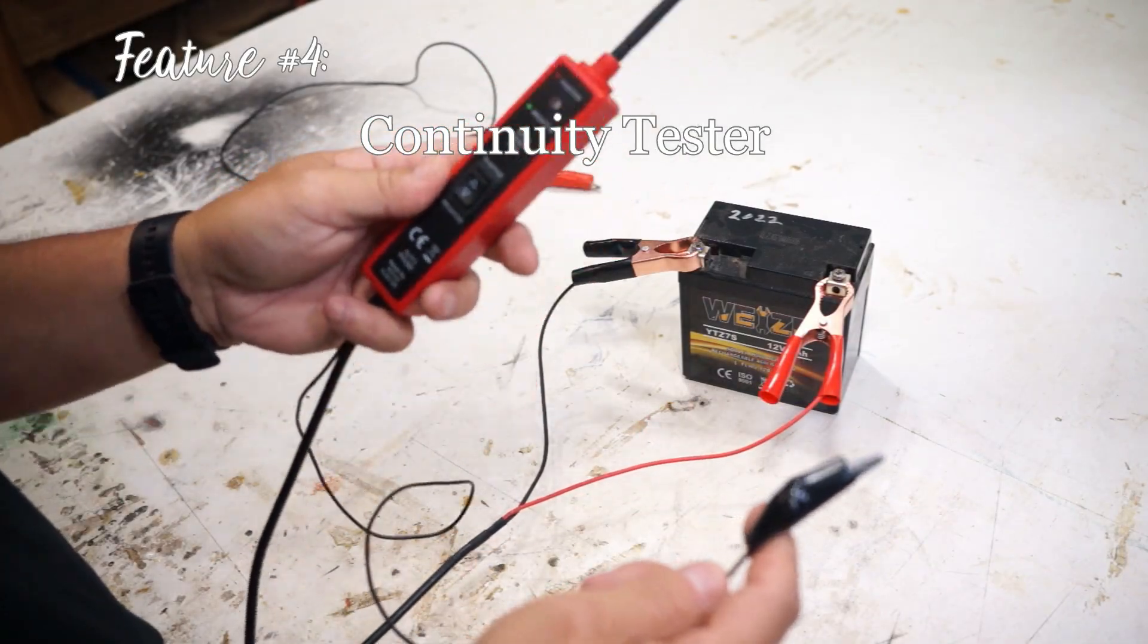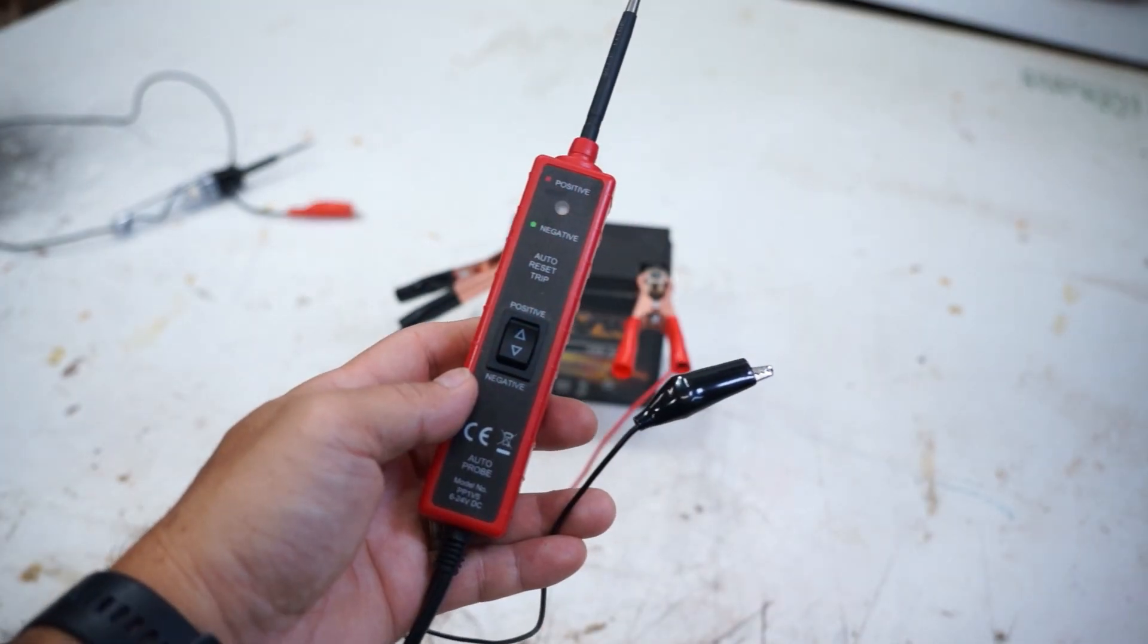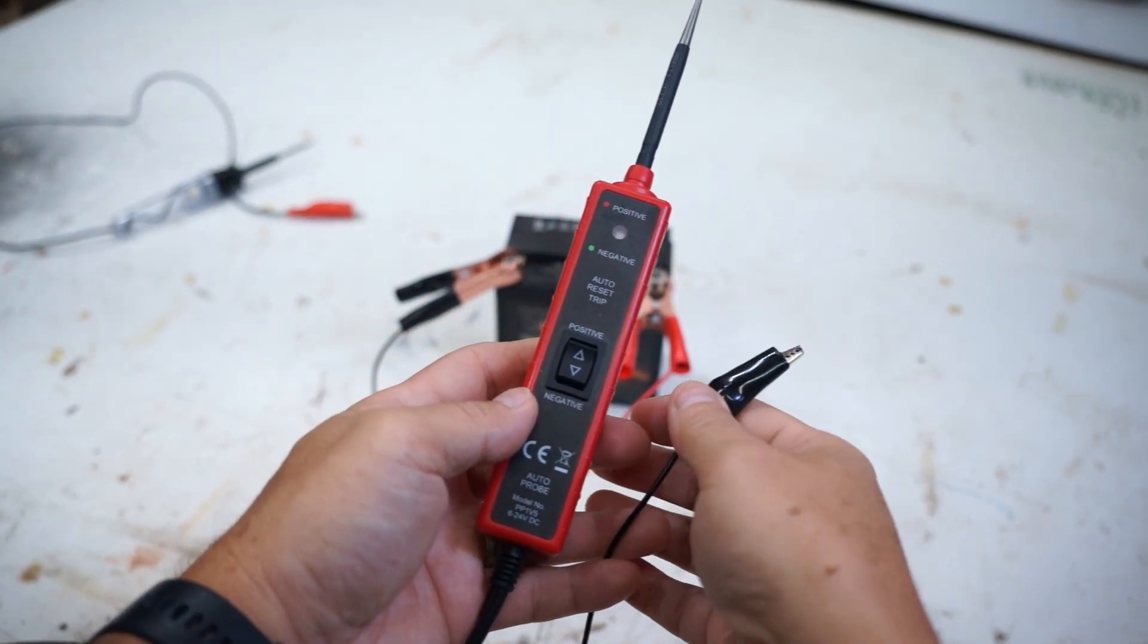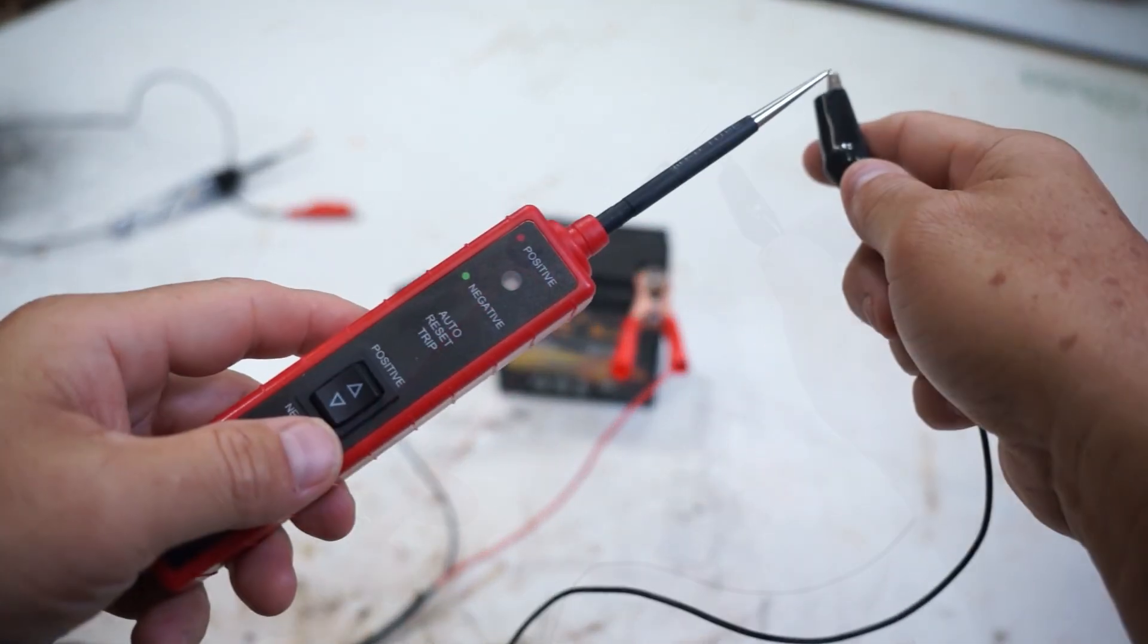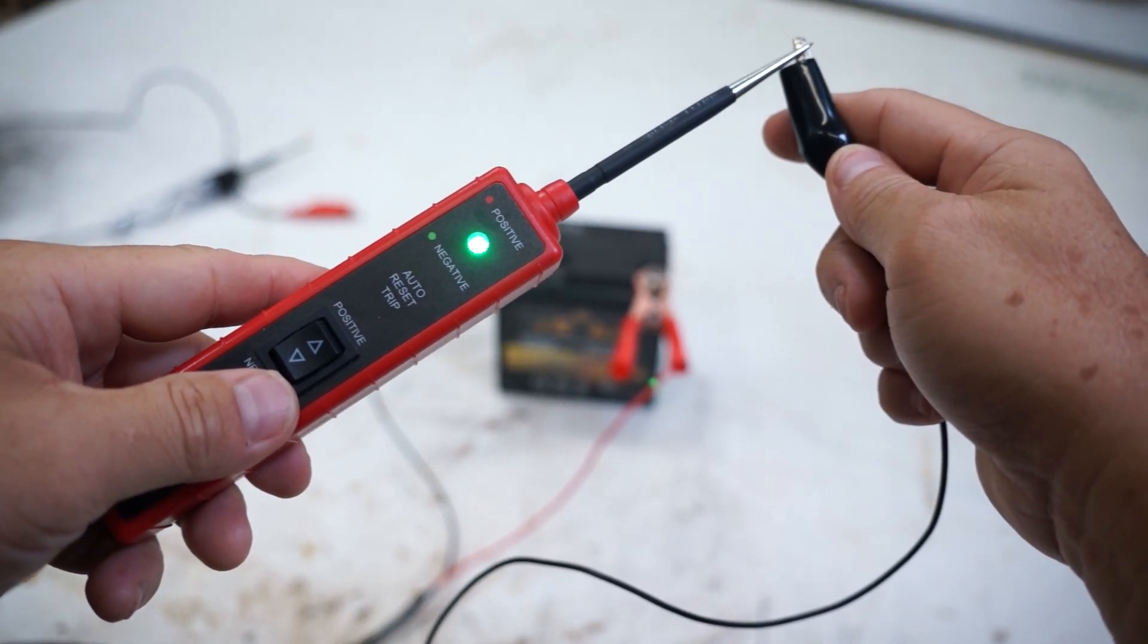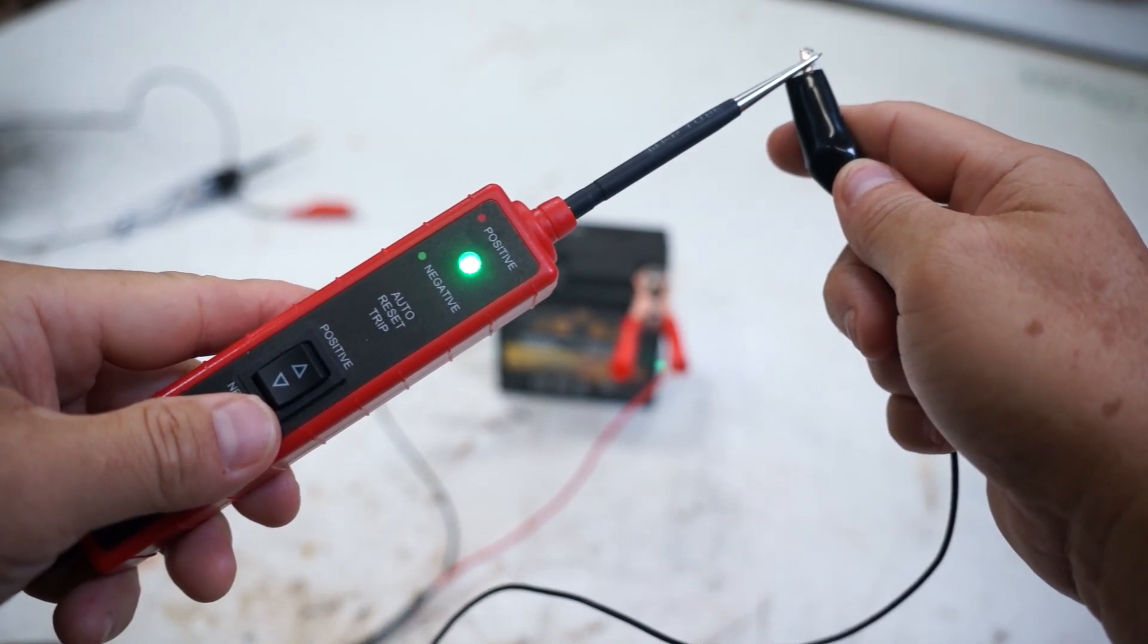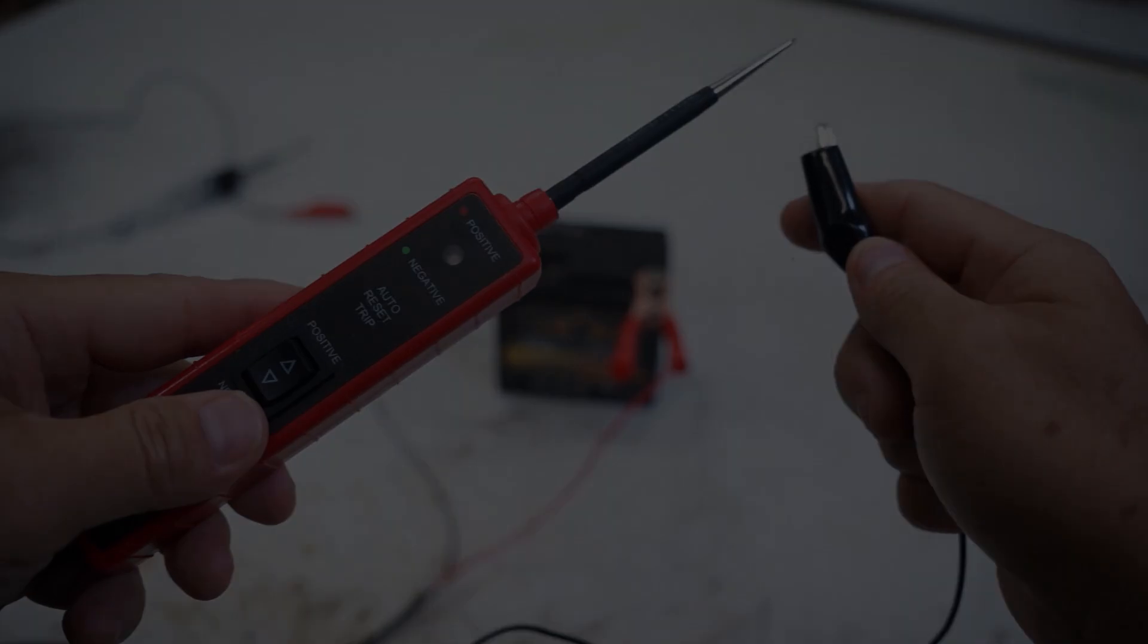Feature number four I like about this is that it's a continuity tester. So you take this extra lead that comes with it. This is basically connected to the negative and this is your negative lead. Attach that to your component and then all you have to do is touch the tip of the probe to the other side and it will tell you if there's continuity going through it.